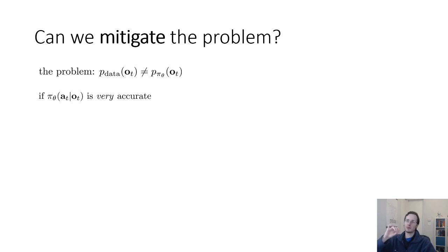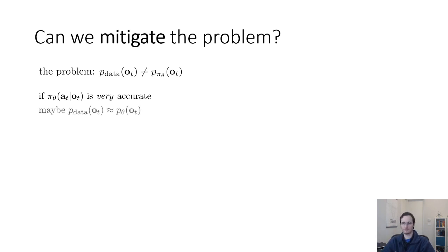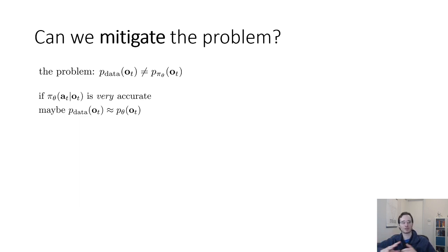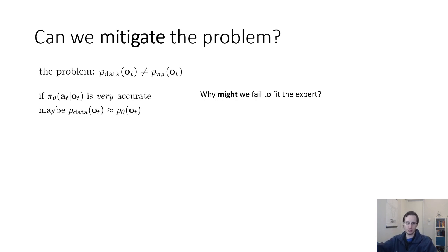The problem can be mitigated if π_θ(a_t | o_t) is very accurate — very similar to the expert's true action distribution. If your policy is very, very good, the distributional shift will be minimal; p_data(o_t) will be approximately equal to p_{π_θ}(o_t). In practice, this sometimes works, and it tends to work better when your dataset is very large. If p_data(o_t) is very broad and your policy fits and generalizes really well, the problem still occurs in theory but can be mild in practice. That's why the NVIDIA car needed to drive 3,000 miles.